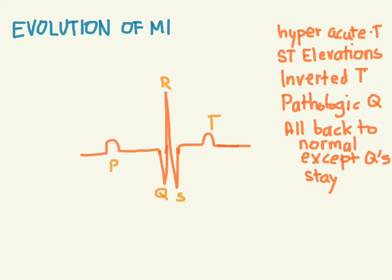So if you see an EKG in a patient in whom you're worried about an MI, and all you see are big T waves, maybe wait a little bit. Then check the EKG again in 5 minutes and 10 minutes, and see if you get ST elevations that are developing later. Maybe you just caught it too early. We'll frequently repeat the EKG to see if it evolves any further.